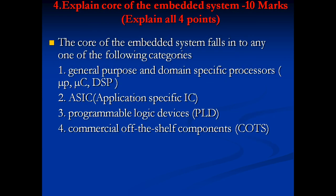Next question: explain the core of embedded systems for 10 marks. You have to explain all four categories. The core of an embedded system falls into one of the following categories: it may use general purpose or domain-specific processors, application-specific ICs, programmable logic devices, or COTS components. Sometimes these questions are asked separately for 5 marks each.